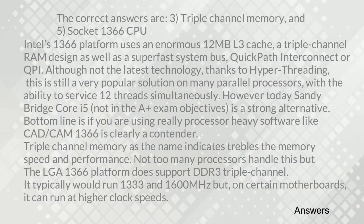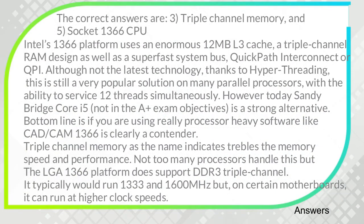The correct answers are 3. Triple-channel memory, and 5. Socket 1366 CPU. Intel's 1366 platform uses an enormous 12MB L3 cache, a triple-channel RAM design, as well as a super-fast system bus — QuickPath Interconnect or QPI. Although not the latest technology, thanks to hyper-threading, this is still a very popular solution on many parallel processors, with the ability to service 12 threads simultaneously.